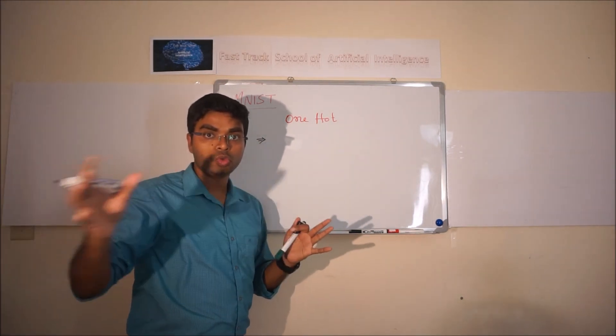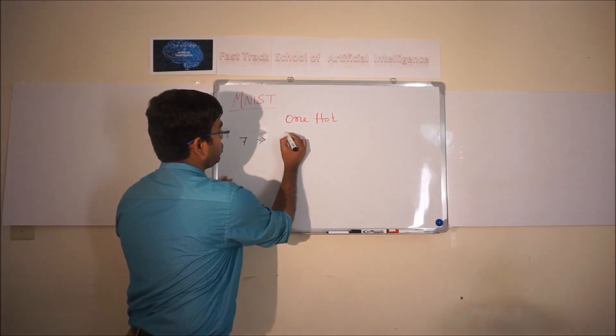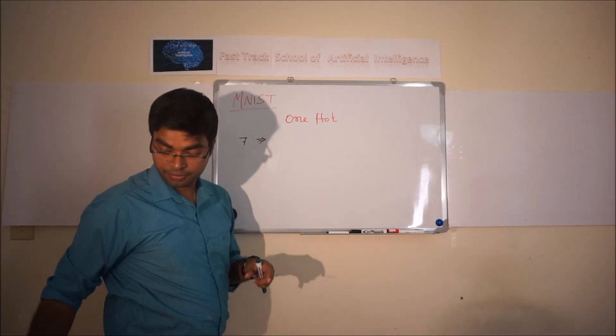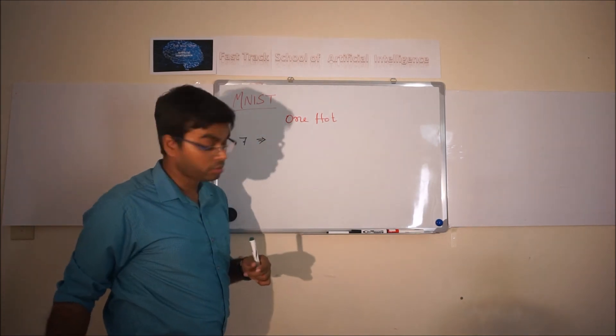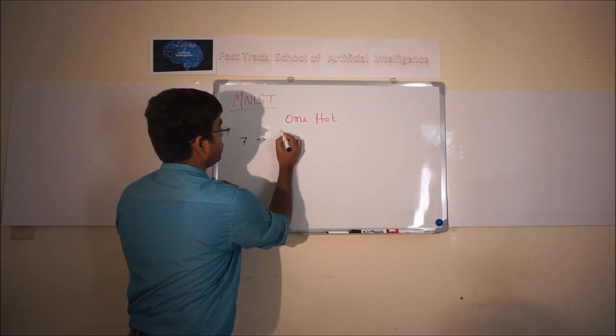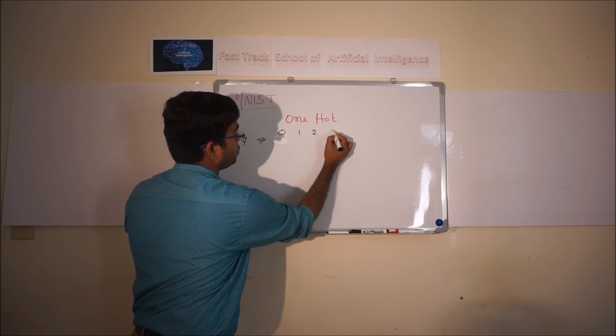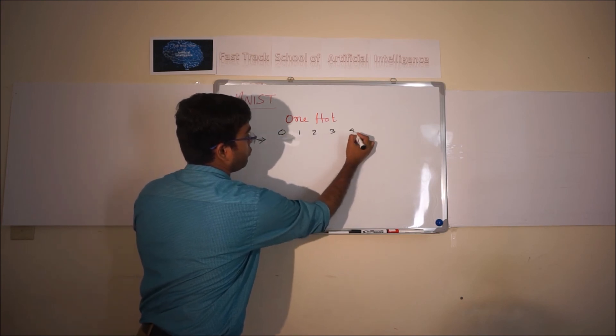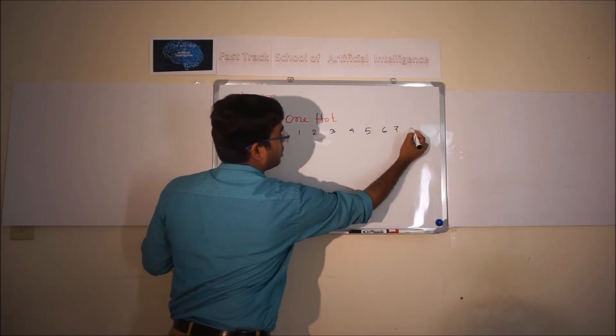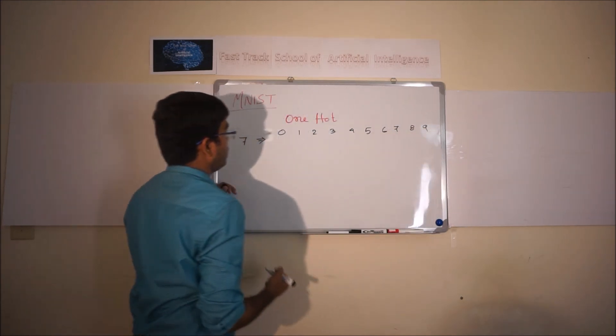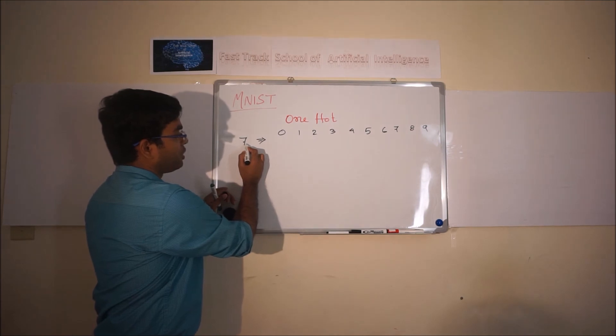So it would be something like, so let me write it down here: 0, 1, 2, 3, 4, 5, 6, 7, 8, 9. If it is number 7, so this particular field, column will have 1.